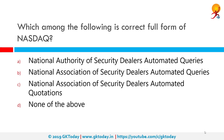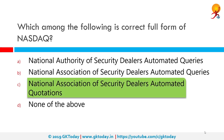Which among the following is the correct full form of NASDAQ? The correct answer is National Association of Securities Dealers Automated Quotations. NASDAQ is an American stock exchange and the second largest stock exchange in the world by market capitalization, behind only the New York Stock Exchange, which is also located in the same city.